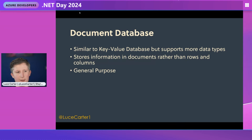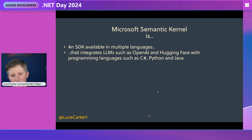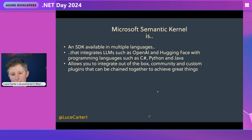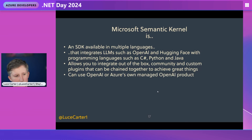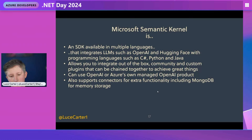First up is Microsoft Semantic Kernel and Azure OpenAI. Semantic Kernel is an SDK available in multiple languages that integrates LLMs such as OpenAI and Hugging Face with programming languages such as Python, C#, and Java. It allows you to integrate out-of-the-box community and custom plugins that can be chained together. You can use OpenAI or Azure's own managed OpenAI product. It supports connectors for storage backends for memory storage, such as MongoDB Atlas, Chroma, DuckDB, Redis, and others.